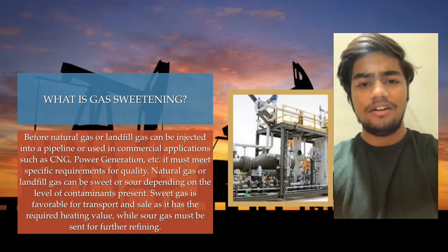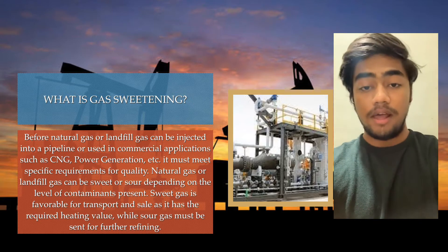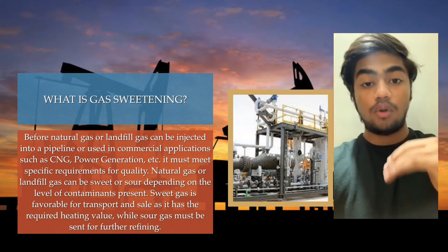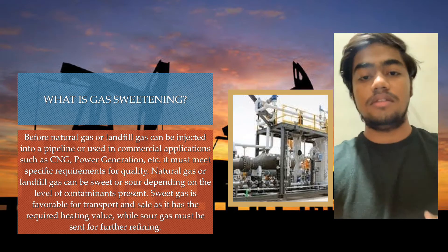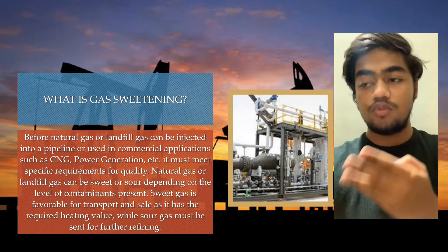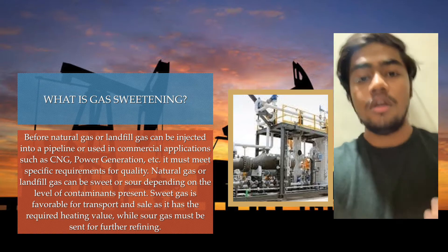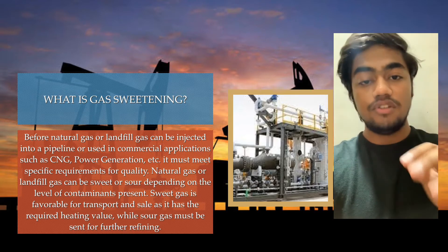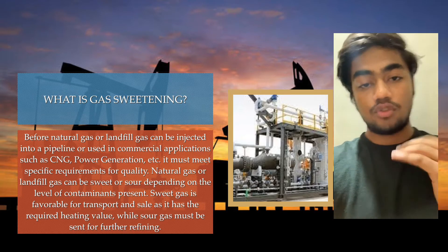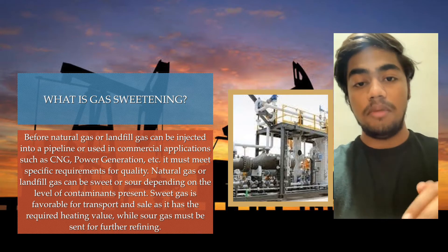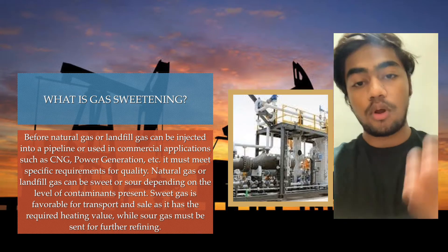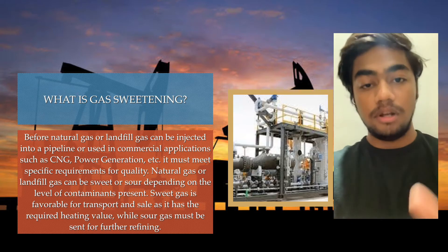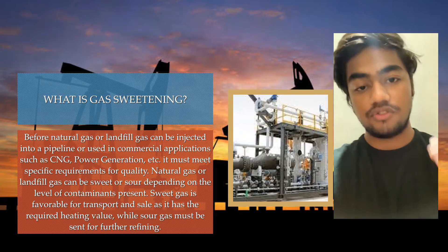Before natural gas can be injected into the pipeline, specific requirements need to be fulfilled. When a gas such as natural gas or landfill gas is withdrawn from the ground, there are two possibilities: either it is a sweet one or it is a sour one. If the gas is sweet, it does not consist of any hydrogen sulfide and is easy to transport. If it is a sour gas, it must go through a sweetening process to remove contaminants before transportation.